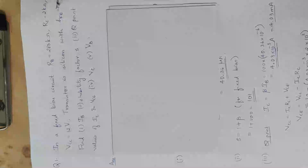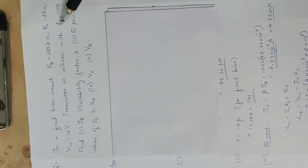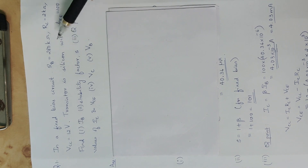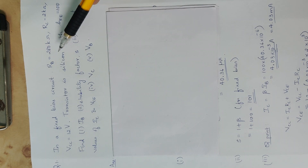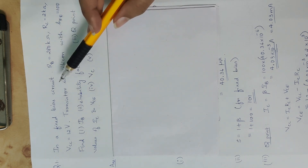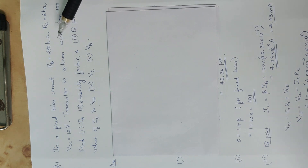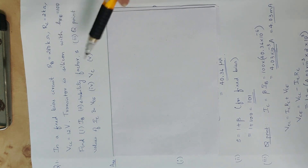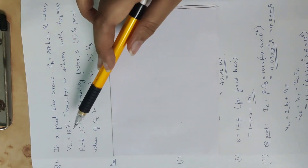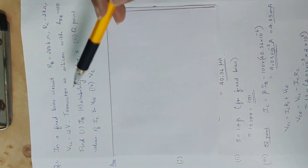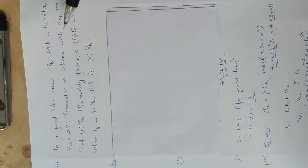We have a problem of a fixed bias circuit. In this biasing circuit, RB is equal to 280 kilo ohm, RC is equal to 2 kilo ohm — base resistance and collector resistance — and supply voltage VCC is equal to 12 volt. The transistor is silicon with HFE equal to 100.